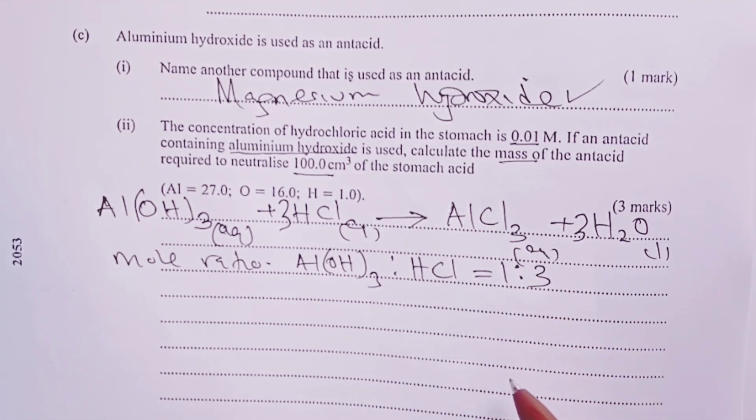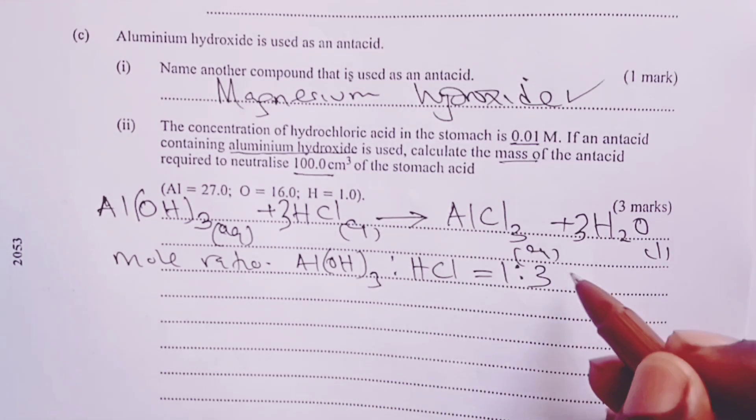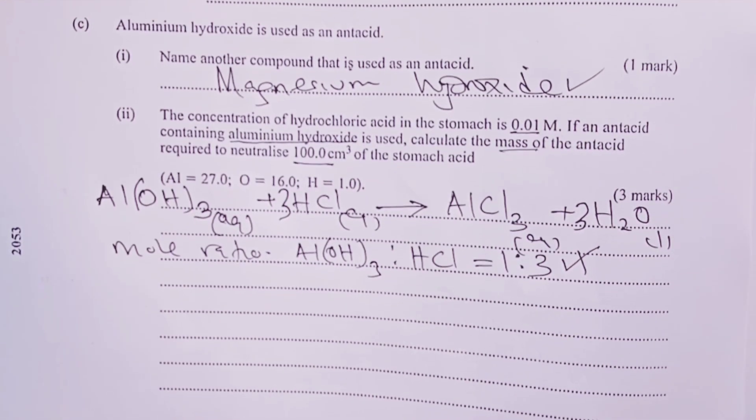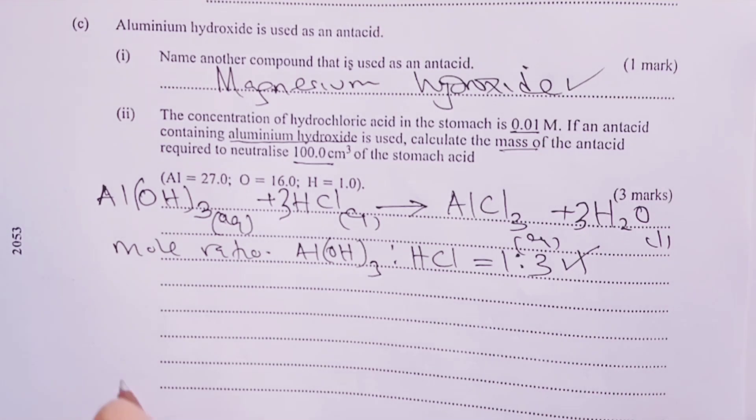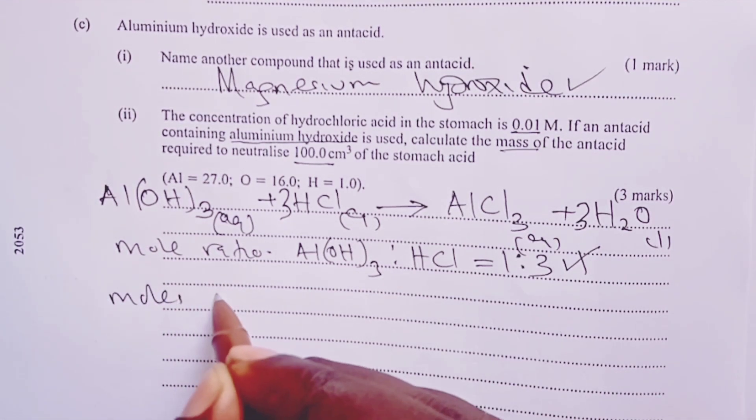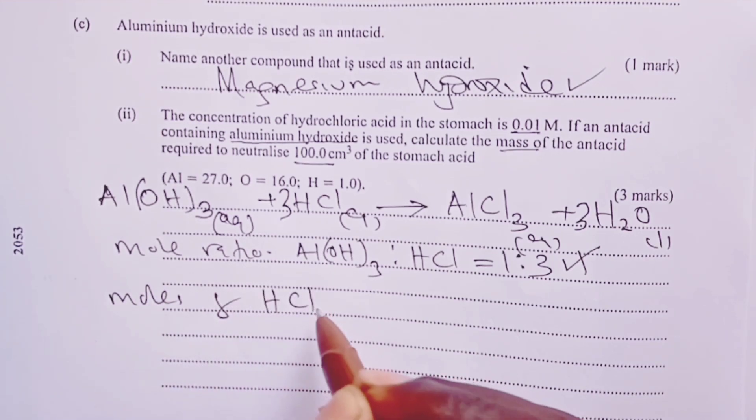The most important thing that we learn from this equation is that the mole ratio between our aluminium hydroxide and hydrochloric acid is 1:3. And this is where we began awarding marks by giving that mole ratio a score of half a mark.